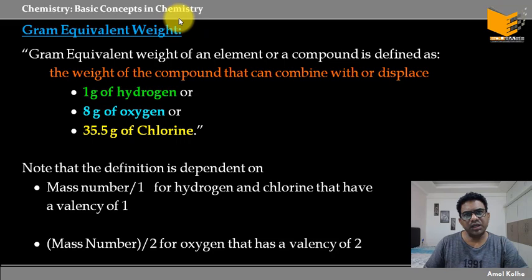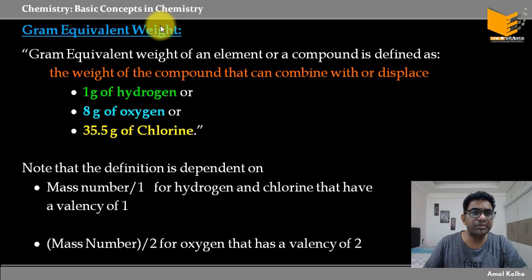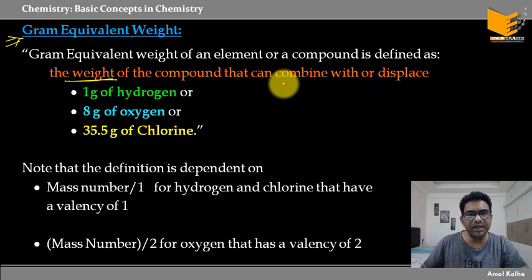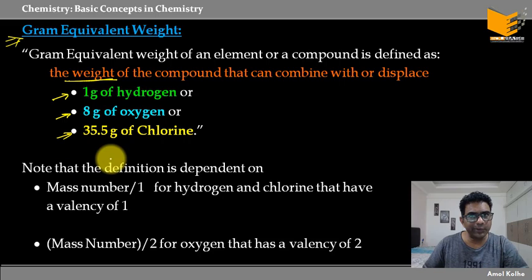Hello guys, welcome to chemistry course. Let's continue with basic concepts in chemistry. This is something you must understand — it is actually more sensible than all the concepts we have seen before. This term is gram equivalent weight. The definition of gram equivalent weight of an element or compound is defined as the weight of compound that can combine or displace either 1 gram of hydrogen, 8 gram of oxygen, or 35.5 gram of chlorine.